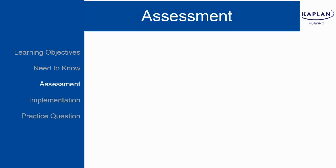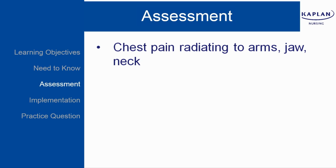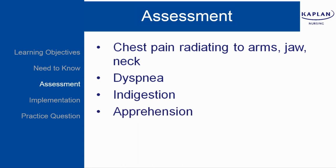Symptoms vary depending on whether pain, shock, or pulmonary edema dominates the clinical picture. Chest pain radiating to arms, jaw, neck, back. The pain will be unrelieved by rest or nitroglycerin and is often described as crushing, prolonged, or severe. Dyspnea. Indigestion with nausea, vomiting, and discomfort. Apprehension and anxiety. Restlessness. Feeling of impending doom or impending death.